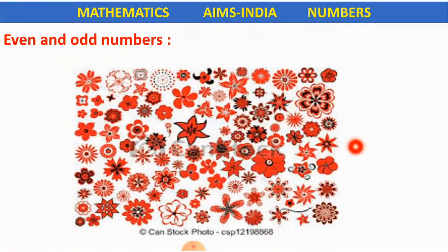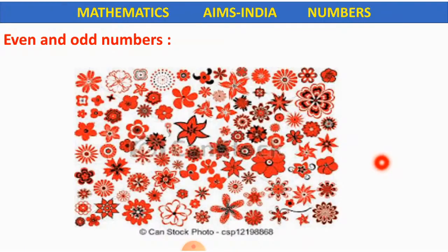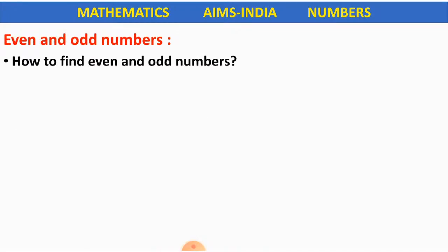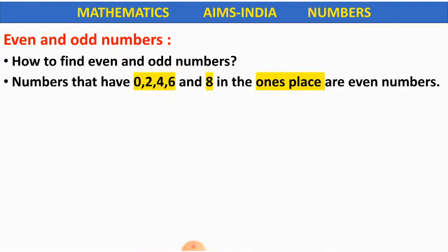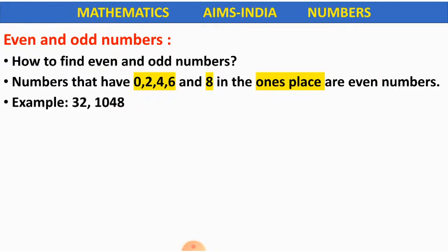That was an easy image where we had only a few balls. Now look at this image — we are having many flowers. We cannot form groups of 2 and check whether these flowers represent an odd or even number. So we will learn how to find even and odd numbers. Numbers that have 0, 2, 4, 6 and 8 in the ones place are even numbers.